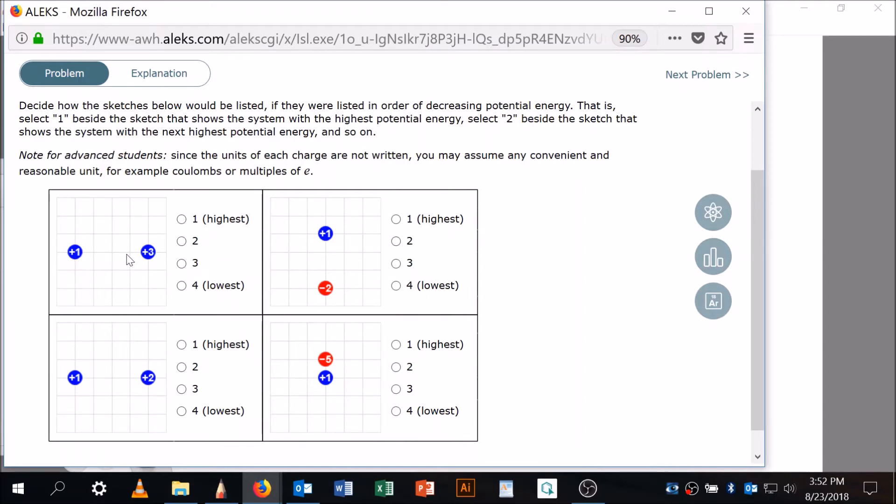Well, these are also four units away, but they don't dislike each other as much. Do you see that? Plus one and plus two is not as bad as plus one and plus three. So this is going to be the highest. I'm going to click here. I won't click because this is only a snapshot. I'm going to click there. And then this one is the next most. That's going to be number two. So one, two, three, and four.